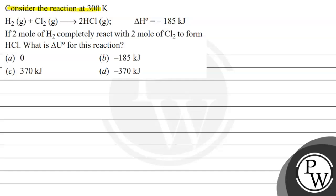Hello Bacho, let's read this question. Consider the reaction at 300 Kelvin: H2 gas plus Cl2 gas leads to the formation of 2 HCl. The standard change in enthalpy given is minus 185 kJ. If 2 mol of H2 completely react with 2 mol of Cl2 to form HCl, what is ΔU° for this reaction? These are the following options given to us. So basically in this question we have to